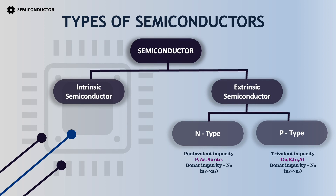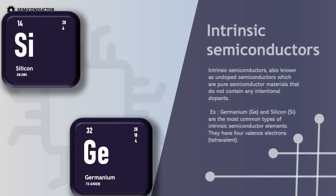Types of semiconductors — Intrinsic semiconductors: Intrinsic semiconductors, also known as undoped semiconductors, are pure semiconductor materials that do not contain any intentional dopants. Germanium and silicon are the most common types of intrinsic semiconductor elements, and they have 4 valence electrons, making them tetravalent.